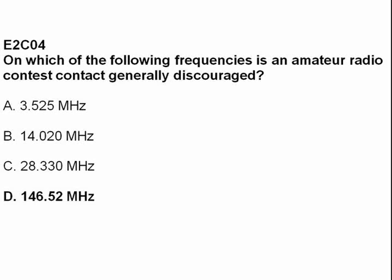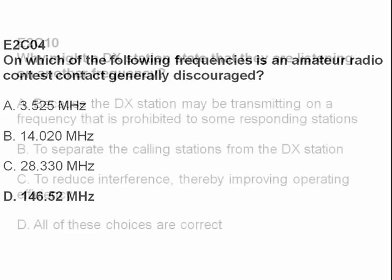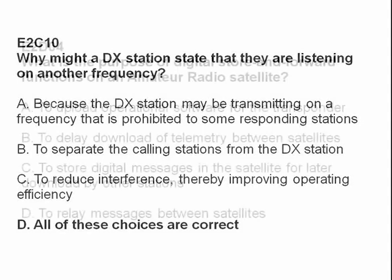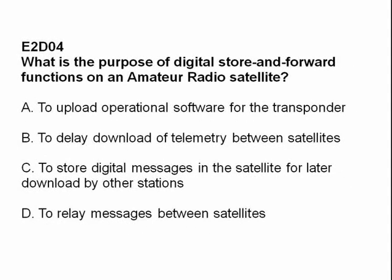The answer is D: 146.52 megahertz. Why might a DX station state that they are listening on another frequency? The answer is D: all of these choices are correct. What is the purpose of digital store and forward functions on an amateur radio satellite?